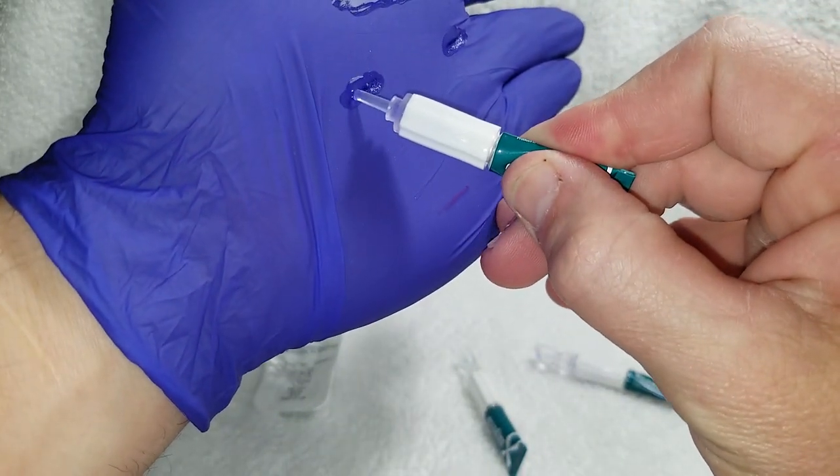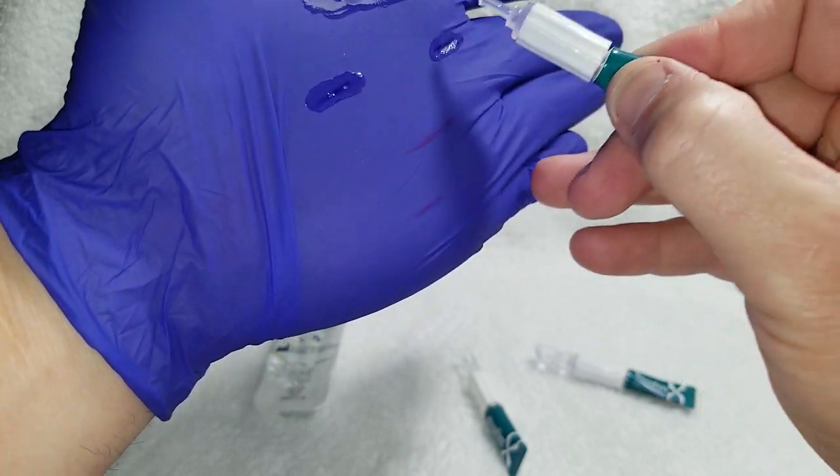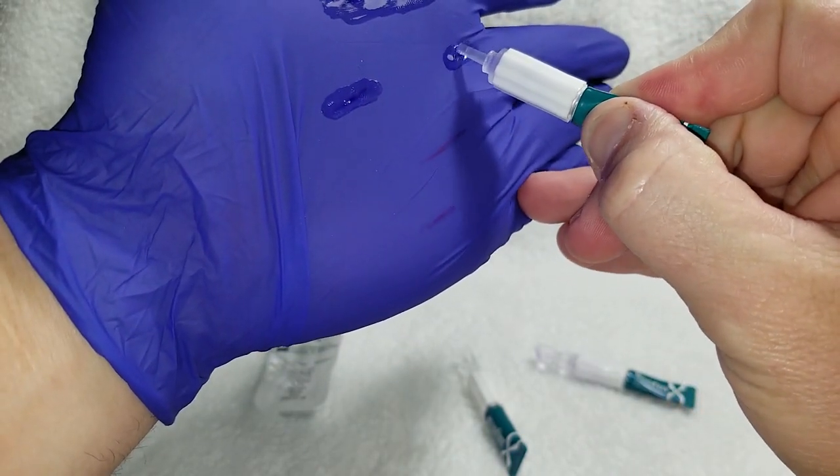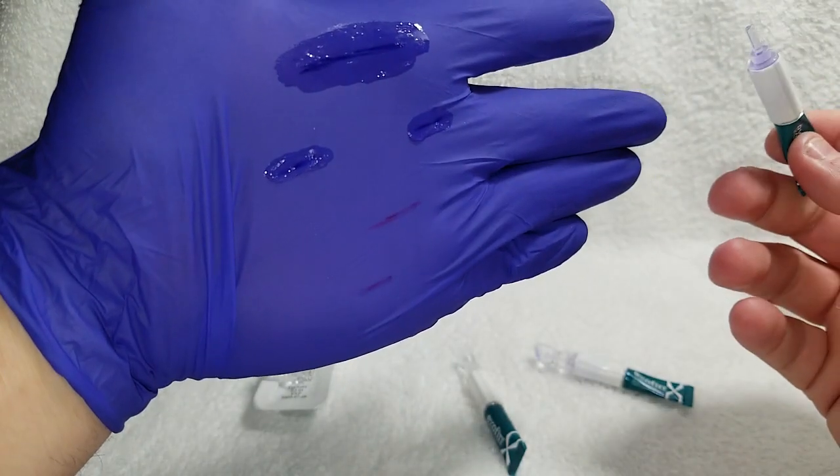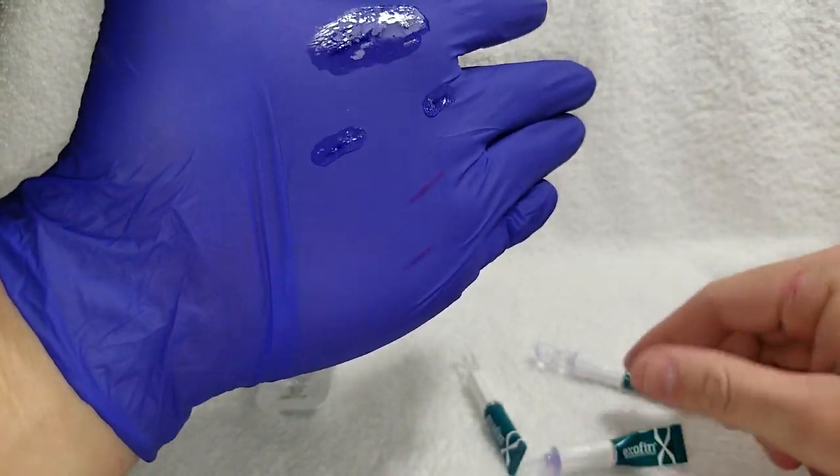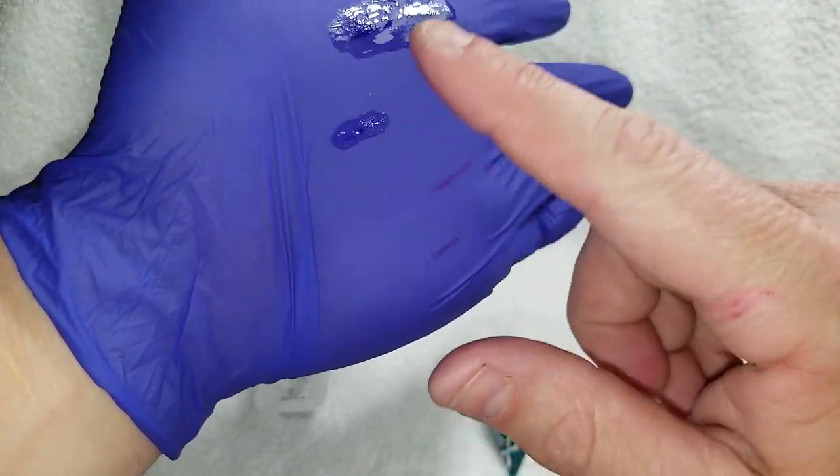Then you can go back and gently squeeze and apply another coat right over the top just like so. Now I'm not squeezing very hard. I'm just giving it a light squeeze just to add the glue to the top. And there again, I'm holding my hand sideways the whole time.